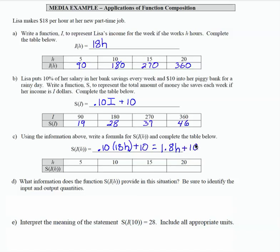So what this function composition allows us to do is to write a function where the hours that she works each week are the input and the output is the amount that she's able to save. So what we're bypassing with this composition function is the income. The income is in here, but it's not explicitly stated at this point. So what we have is savings in terms of number of hours work.